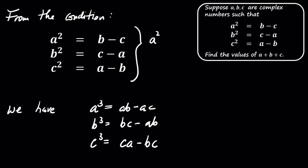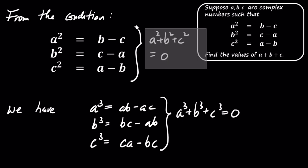Adding these three equations together, we find that A squared plus B squared plus C squared equals zero. Summing these three expressions, we find that A cubed plus B cubed plus C cubed also equals zero.